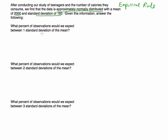A good practice is writing down the information that we know. We're talking about a sample, so the sample mean is 2,000 and the sample standard deviation is 150. What percent of the observations would we expect to fall within one standard deviation of the mean from both sides?